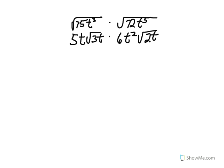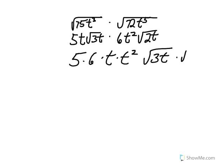So now that we have simplified these two radicals, we are going to multiply them together. Multiply the parts that are under the radical by the parts that are under the radical, and the parts that are not under the radical by the parts that are not under the radical. Please do this now and pause the video while you finish the problem.